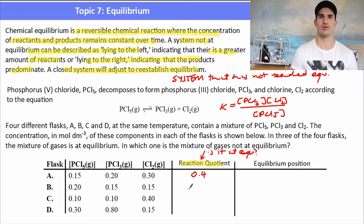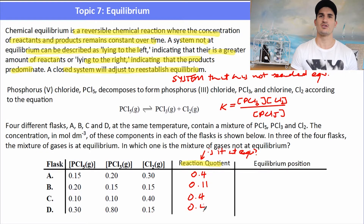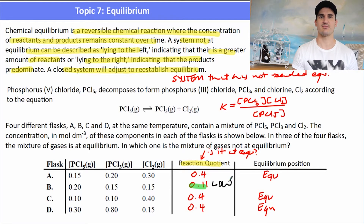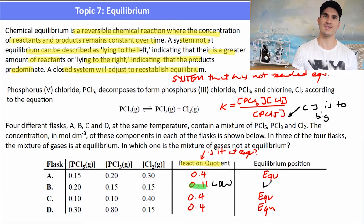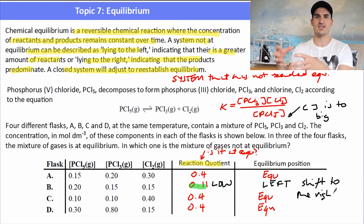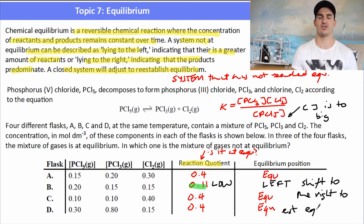For the PCl₅ system, the Kc expression is [PCl₃][Cl₂] over [PCl₅]. We sub in all the concentration values for different flasks: for flask A the reaction quotient Q is 0.4, for B it's 0.11, for C it's 0.4, and for D it's 0.4. So flasks A, C, and D are at equilibrium. Flask B has a Q lower than 0.4, so it's not at equilibrium — the concentration of reactants is too large. The system must shift to the right, meaning some reactants need to react to form products to establish equilibrium.